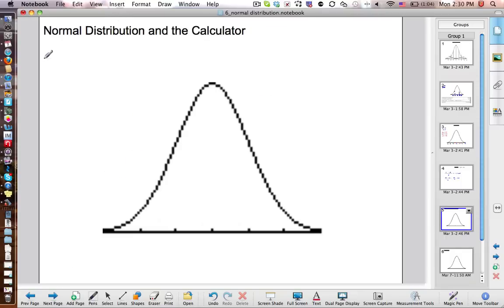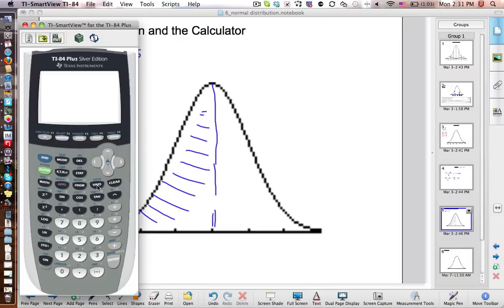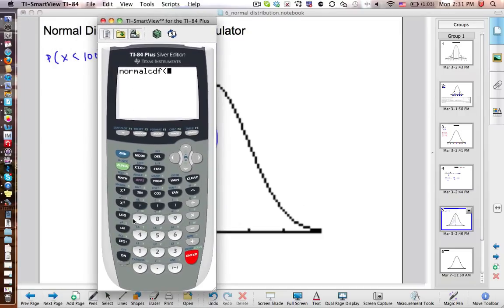So normal distribution in the calculator. Let's say I want to find the probability of randomly picking a person that has an IQ of less than 100. We already know the answer. This distribution is perfectly symmetric, so I want to know this area here. That should be 0.5. So we're going to use our calculator. You go second distribution, normal CDF. Don't ever use normal PDF. Normal PDF is only for graphing, to actually graph this little curve here. You use CDF if you want to actually do some math. So it's normal CDF. You go start, comma, finish.